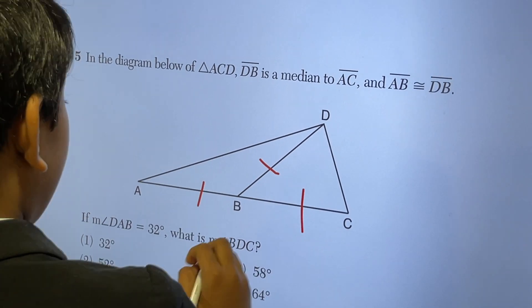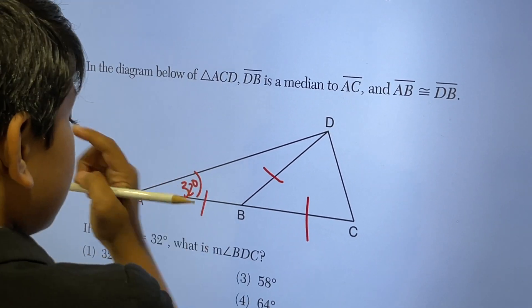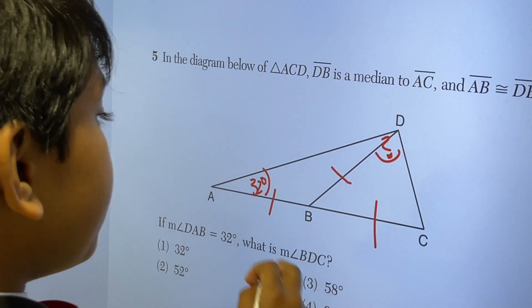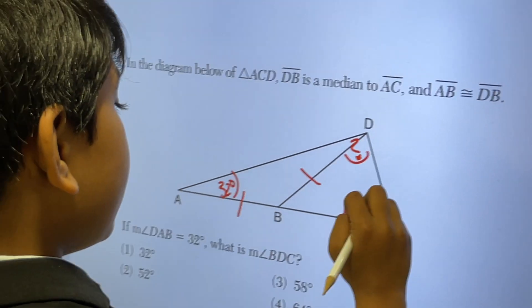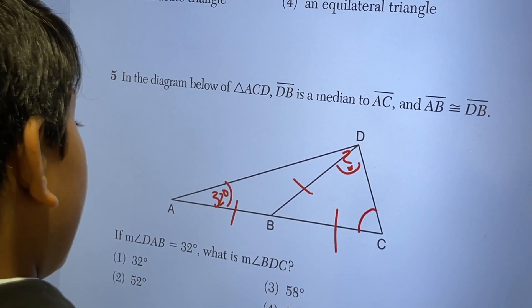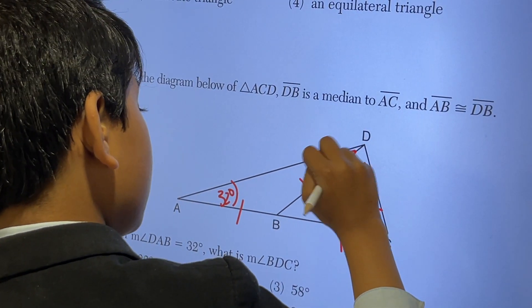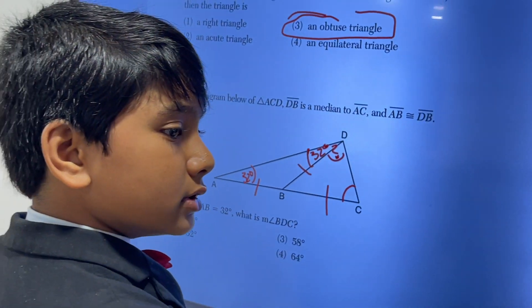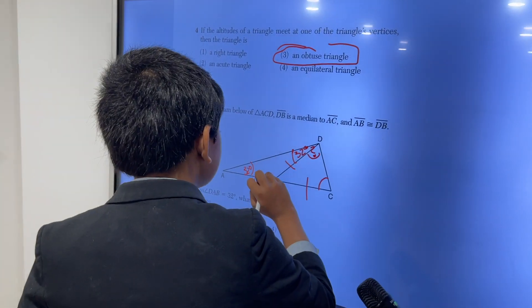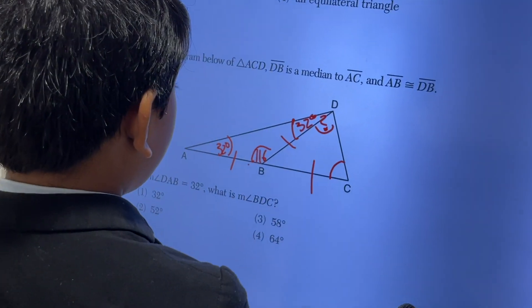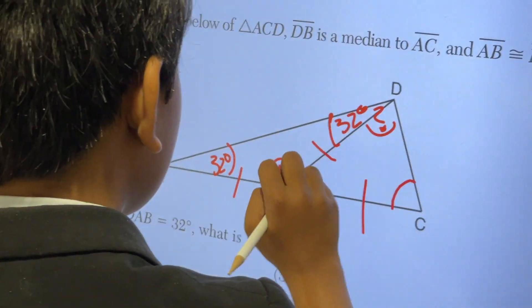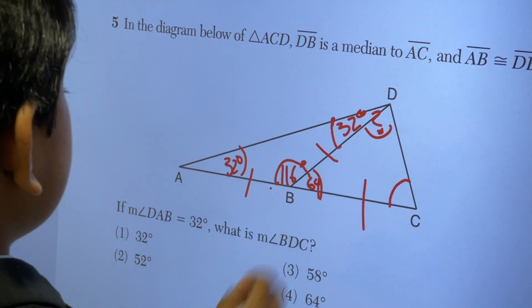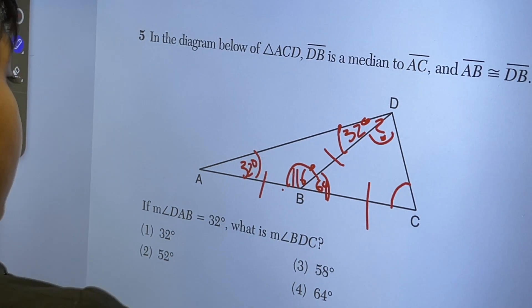So since angle DAB is 32 degrees and we're trying to find BDC, well, because BD and BC are equivalent, that means this is also an isosceles triangle. So this is 32 as well. And using the fact that the sum of all angles in a triangle are 180, we deduce that this is 116, which is 180 minus 32 minus 32, and thus this is 64 because these two are supplementary.